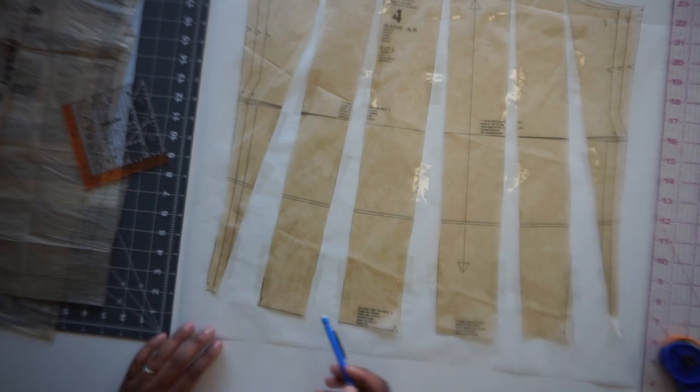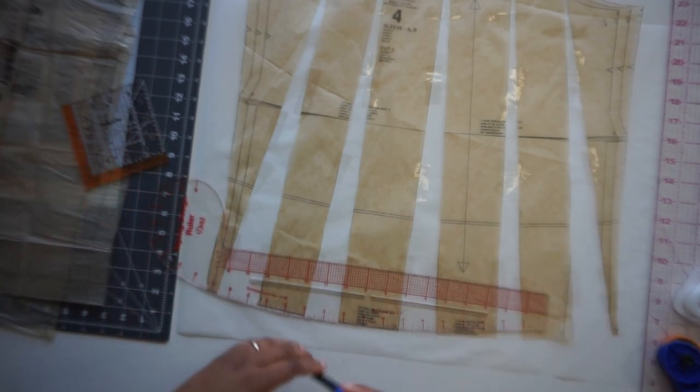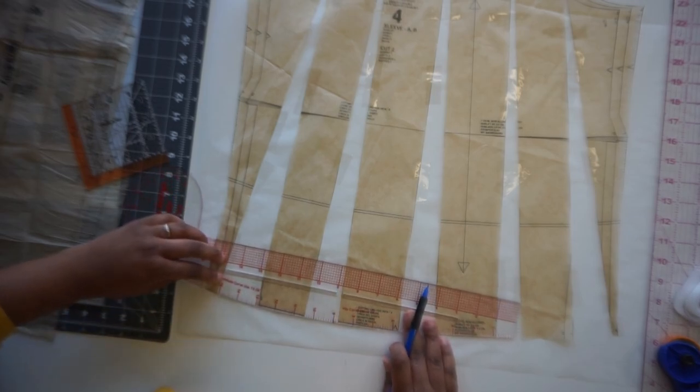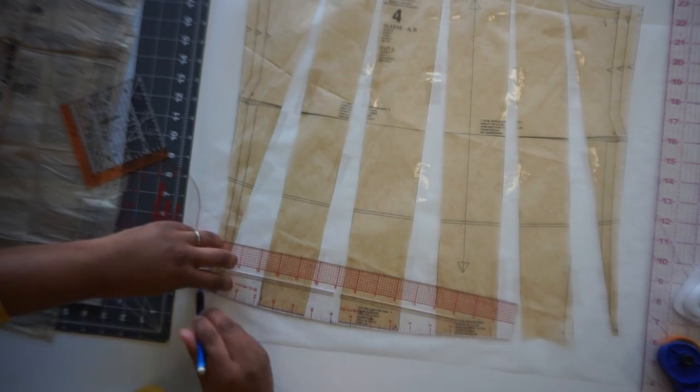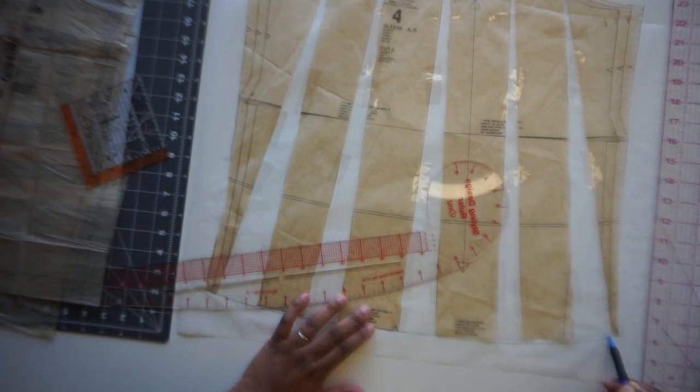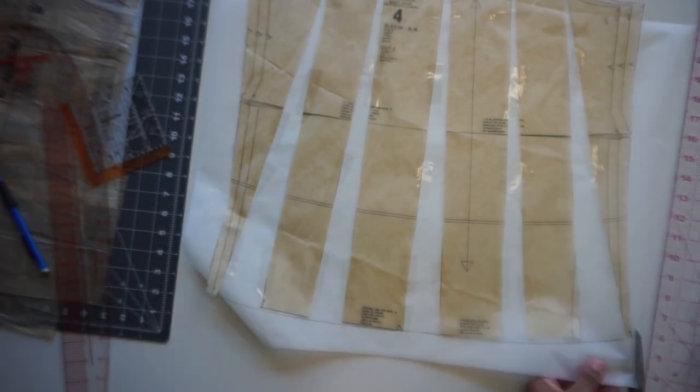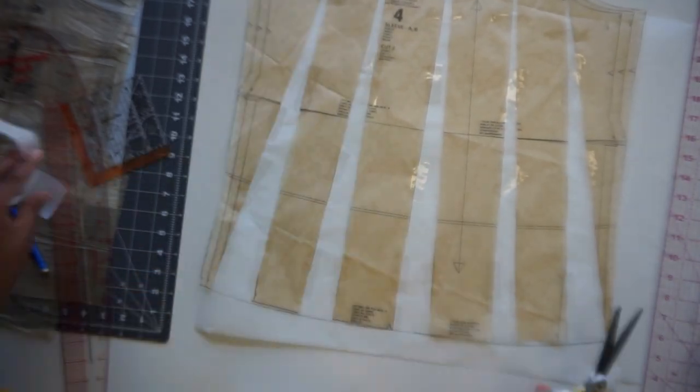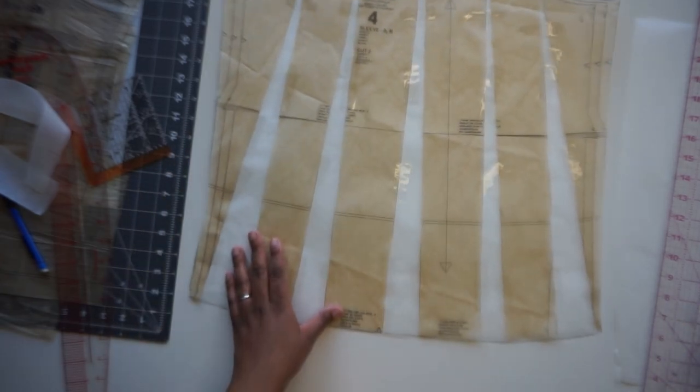Okay, now the next thing that you're going to do is you're just going to connect these lines down here so that when you're cutting it out, you have a clear cut hem for your sleeve. Now you can eyeball this but because I have my French curve, I'm going to go ahead and I'm going to use that because that's going to give me the best bottom. And this is our new sleeve.